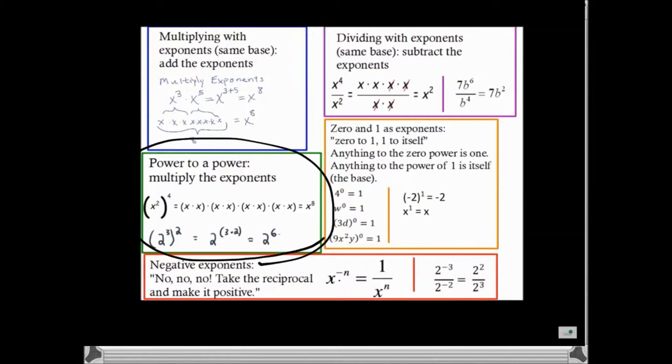When dealing with a power raised to a power, you simply multiply the exponents. Power to a power multiply the exponents. I'm going to show you why.